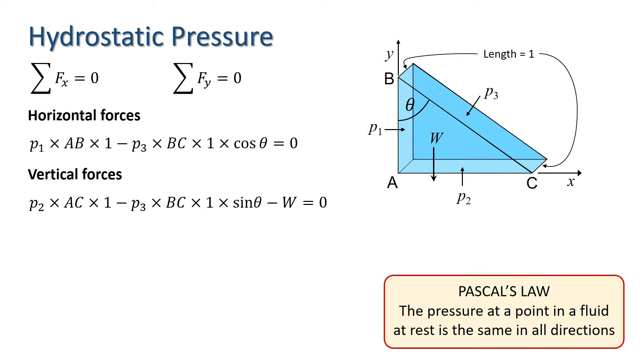If we look at the geometry of our prism, we can see that cos theta equals length AB divided by BC, and sin theta equals AC divided by BC. Thus, we can deduce from the horizontal forces equation that P1 equals P3, and from the vertical forces equation that P3 equals P2 minus W divided by AC.